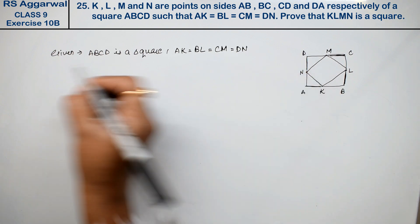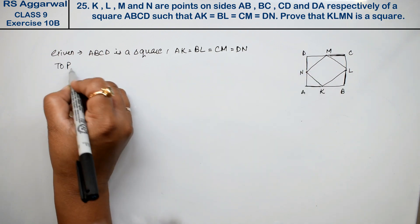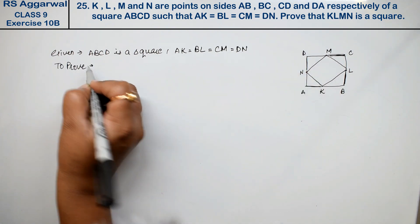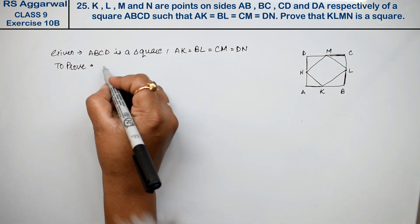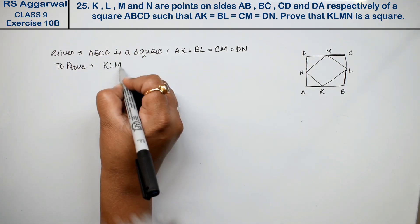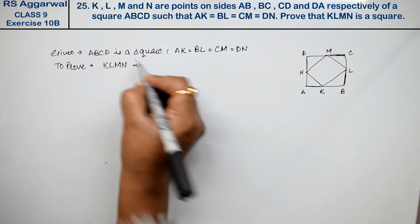So what is given? To prove: KLMN is a square. This is also a square — this is what we need to prove.